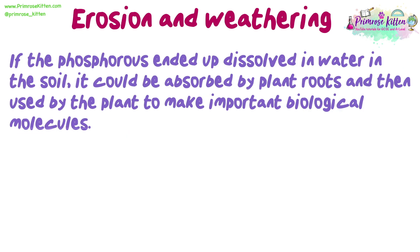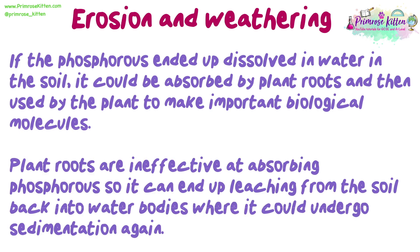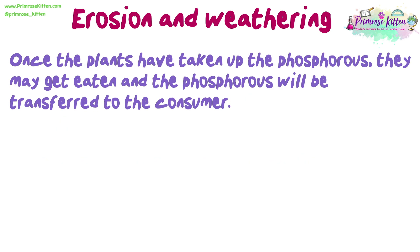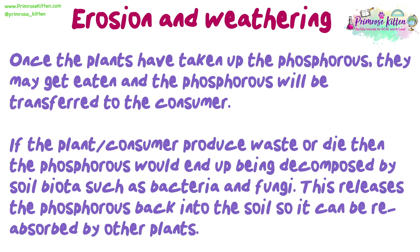If the phosphorus ended up dissolved in water in the soil, it could be absorbed by plant roots and then used by the plant to make important biological molecules. Plant roots are ineffective at absorbing phosphorus, so it can end up leaching from the soil back into water bodies, where it could undergo sedimentation again. Once plants have taken up the phosphorus, they may get eaten and the phosphorus will be transferred to the consumer. If the plant or consumer produces waste or dies, the phosphorus would be decomposed by soil biota such as bacteria and fungi, releasing it back into the soil so it can be reabsorbed by other plants.